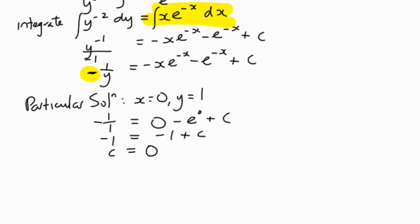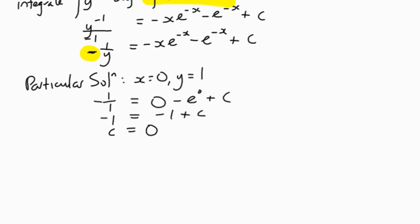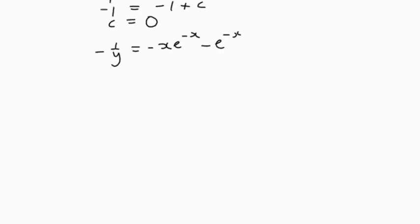So in other words, what we've done is we've simplified the problem a little bit by saying that our function, negative 1 over y is equal to negative x, e to the negative x, minus e to the negative x. We don't need to put plus c anymore. We can multiply through by negative 1, and that makes everything positive. I would like to have positive things. Well, we've got a common factor of e negative x, x plus 1.